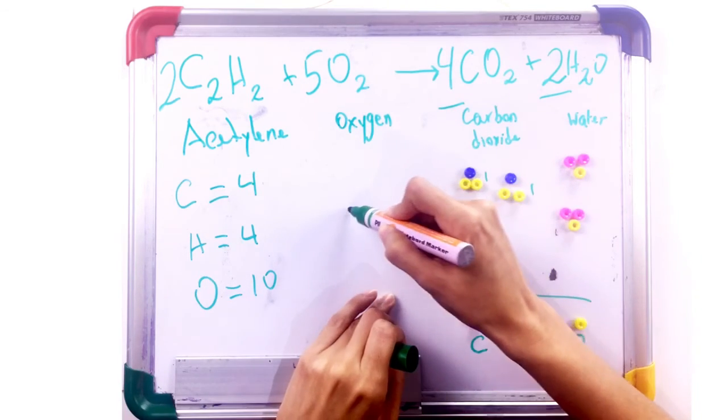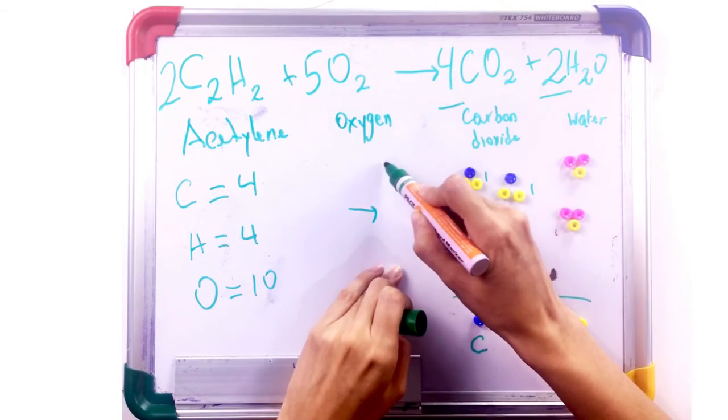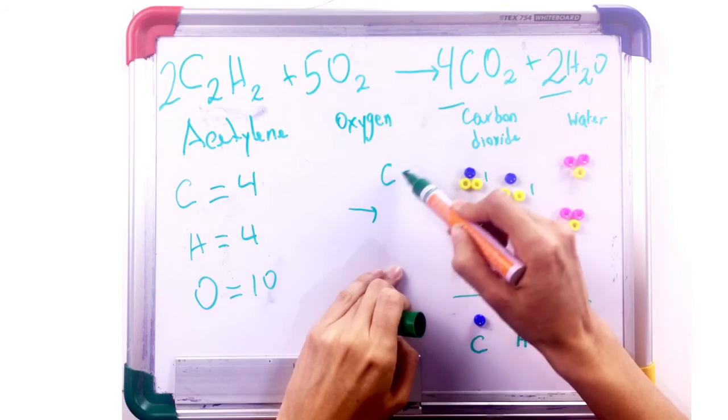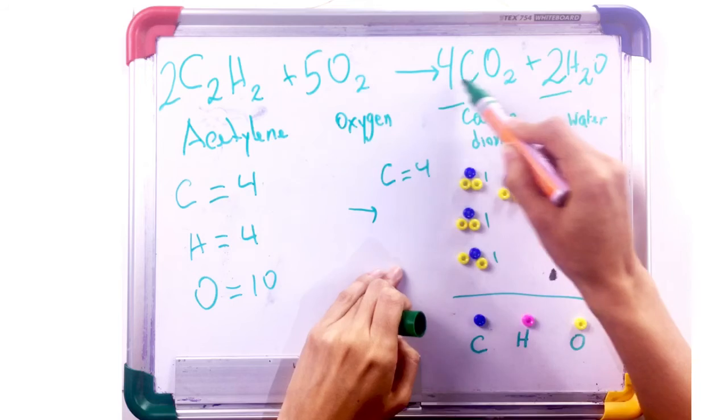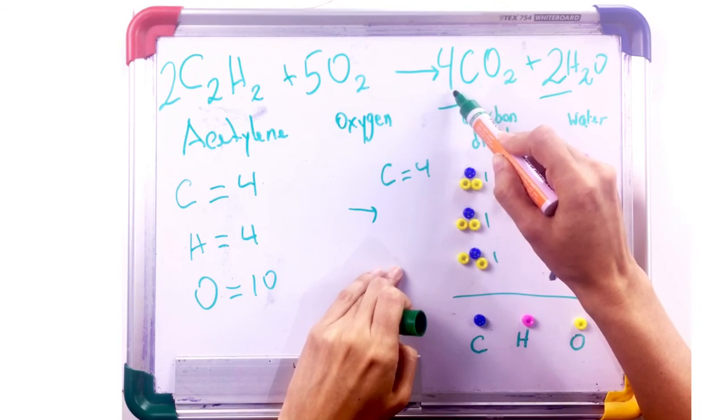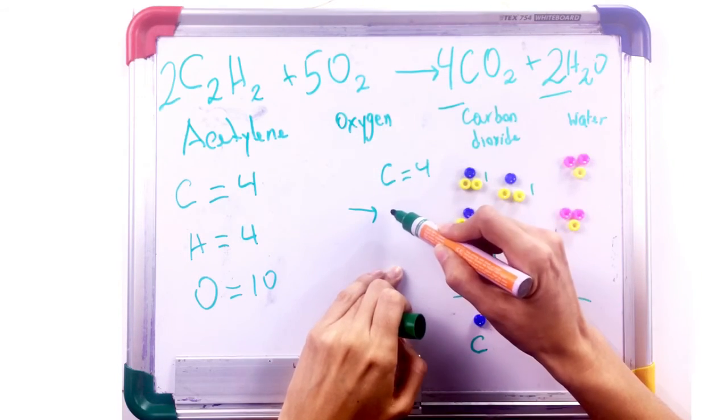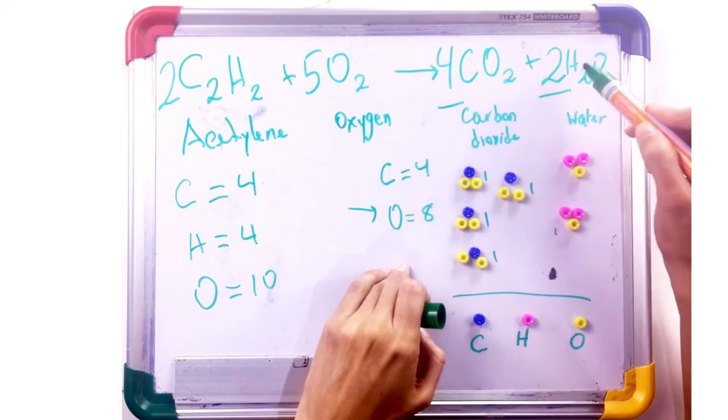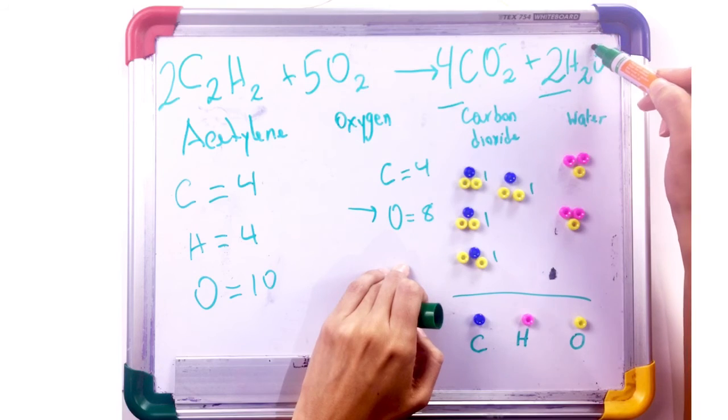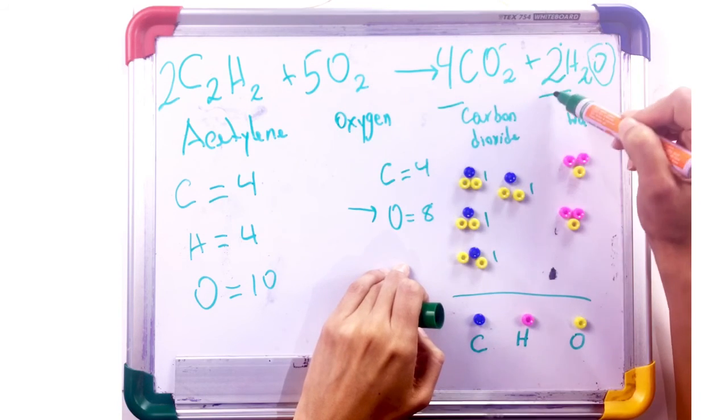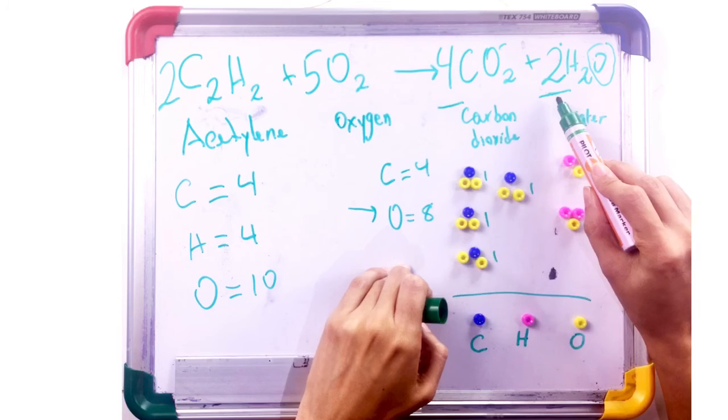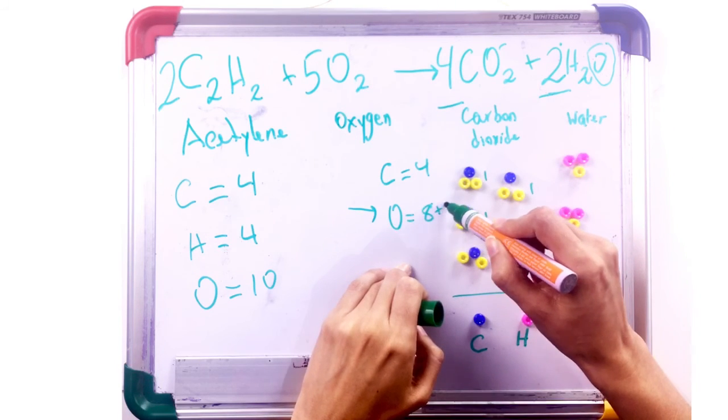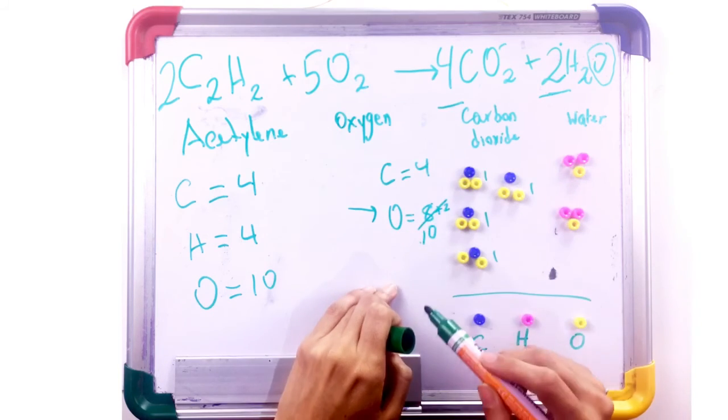On the product side, we have carbon, four. The oxygen is affected by the coefficient here. So two times two, that's eight oxygen. But we still need to add the other oxygen that we have here, that is affected by the two here, the coefficient. So two times one here, that's two. So plus this two, that's equal to 10 oxygen now.